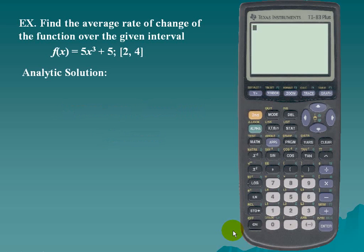Average Rate of Change. Example: find the average rate of change of the function f(x) = 5x³ + 5 over the given interval from 2 to 4.